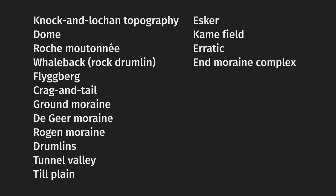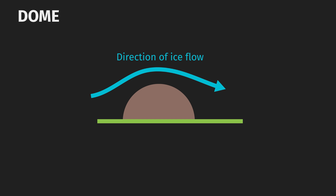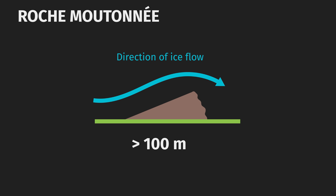Those rocky hills may come in a variety of forms. Domes are small dome-shaped rocky hills, less than about 100 meters in size, with a smooth and exfoliated surface. Roche moutonnées are again small hills of solid rock, less than 100 meters in size. Unlike domes, they are streamlined or elongated in the direction of the ice flow. Their stoss sides are gently sloping and their lee sides are steep, rugged and cliff-like.